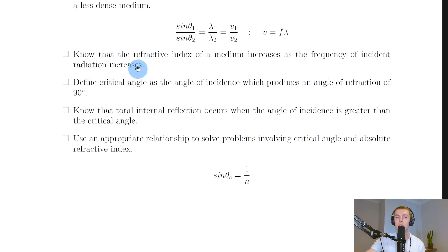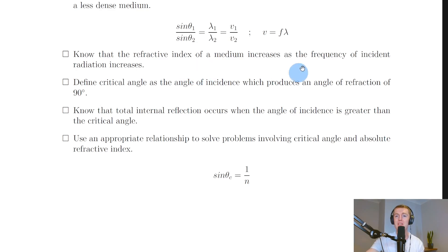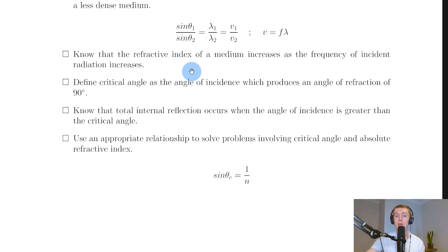The refractive index of a medium increases as the frequency of incident radiation increases. Red light has the greatest wavelength (~700 nm) and therefore the lowest frequency and the lowest refractive index. Blue or violet light has a shorter wavelength (~400 nm), a higher frequency, and therefore a greater refractive index than red light.